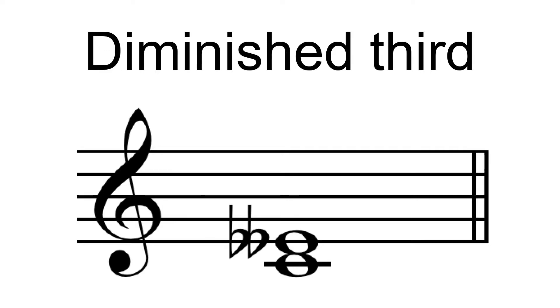In 22 equal temperament, the diminished third is 109 cents while the chromatic semitone is 163 cents and the diatonic semitone is 55 cents.